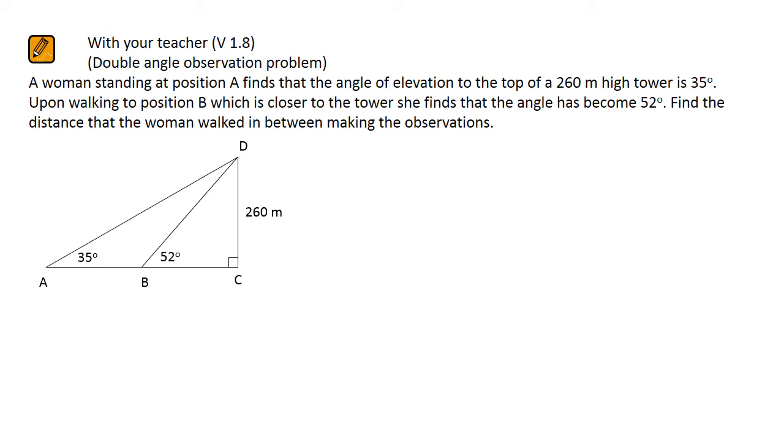We're going to start by looking at the big triangle, ACD. We've got enough information about that triangle that we could work out the distance from A to C. We'll call it X. Then we're going to look at the other triangle, the small triangle, BCD. There's enough information there that we could work out the distance from B to C. We'll call it Y.